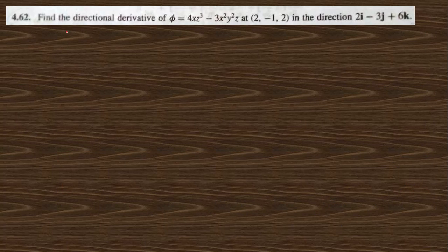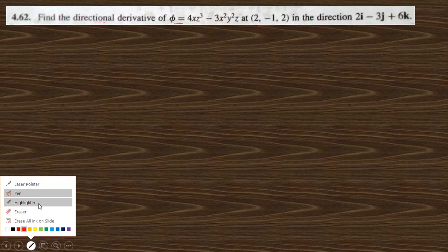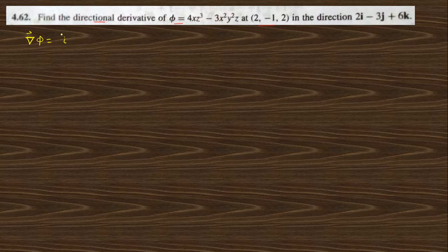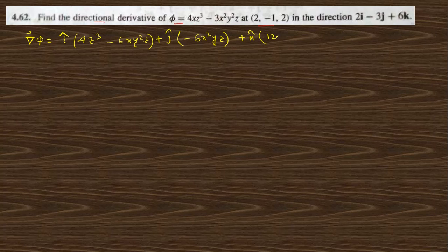Question 4.62 says: find the directional derivative of φ at this point in this direction. For getting the directional derivative you need to find grad φ. Grad φ is i-cap times ∂φ/∂x. If we differentiate with respect to x we get 4z³ minus 6xy²z, plus j-cap with respect to y we get 6x²yz, and k-cap with respect to z that is 12xz² minus 3x²y².